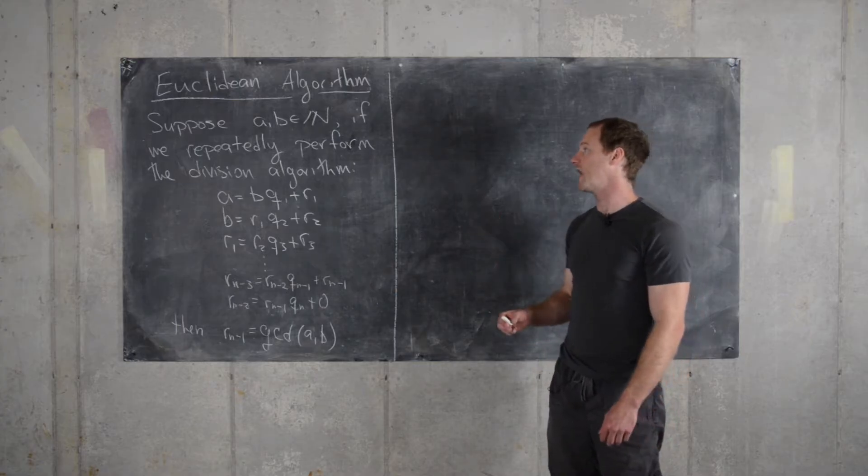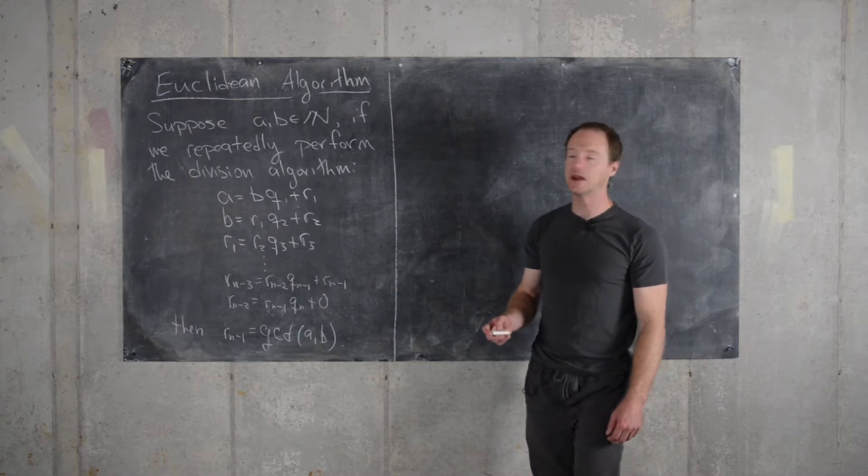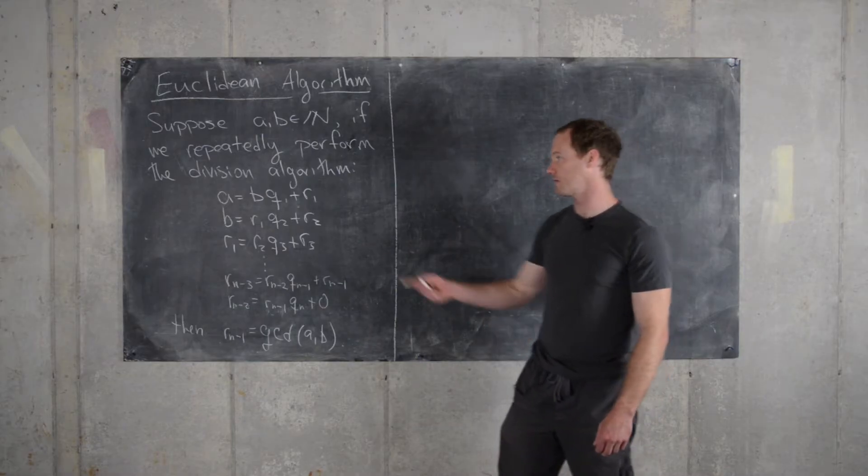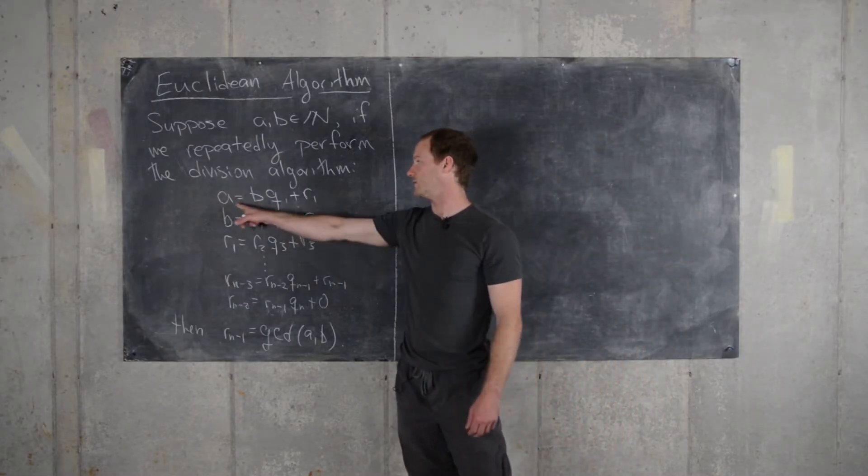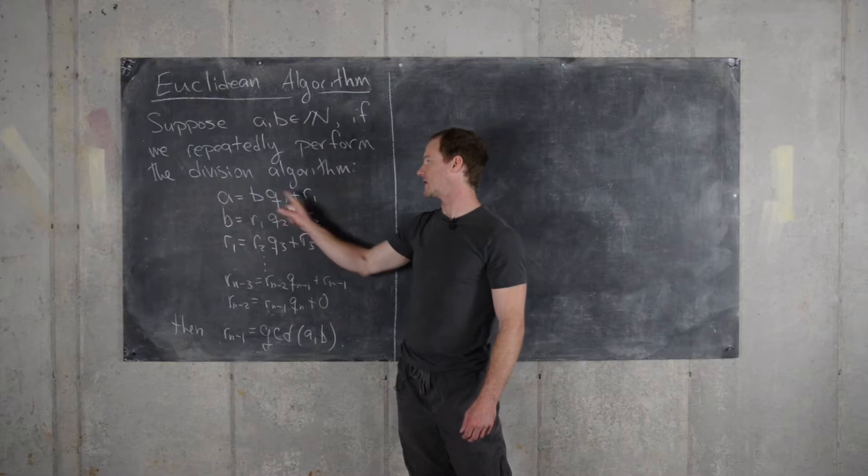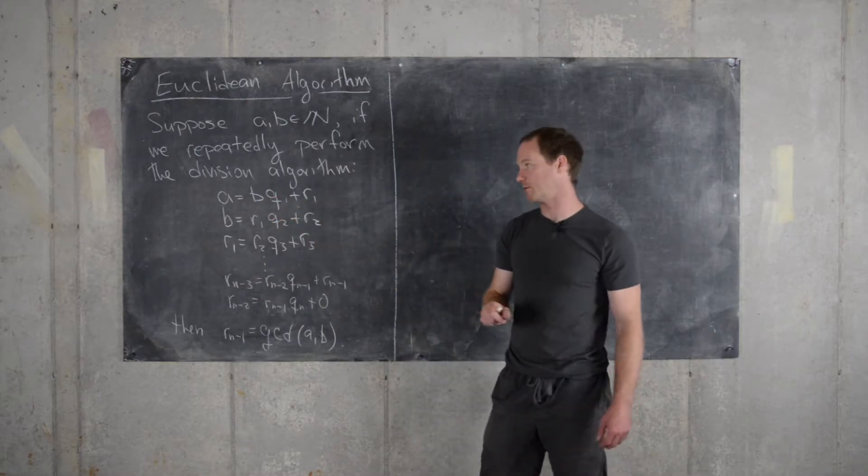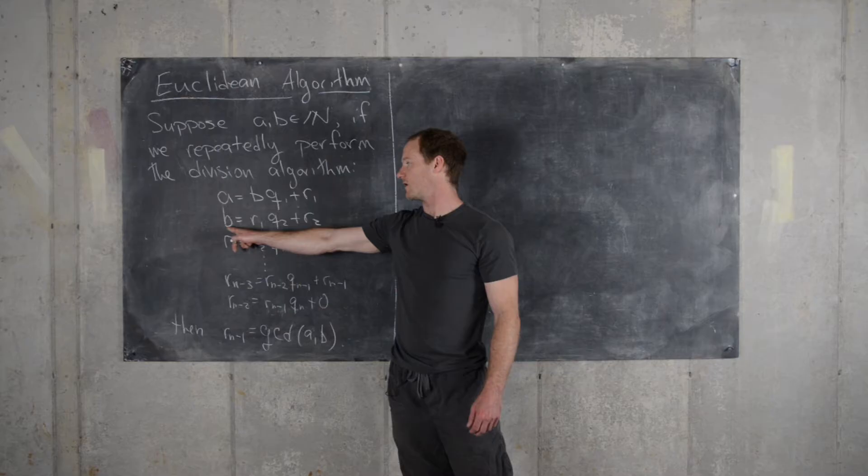Suppose we have A and B natural numbers. If we repeatedly perform the division algorithm, we divide A by B. We get A equals B times the first quotient plus the first remainder. And then we send B down and it's playing the role of A.